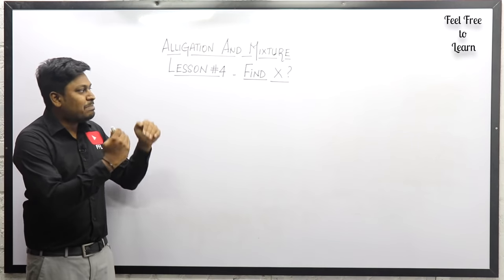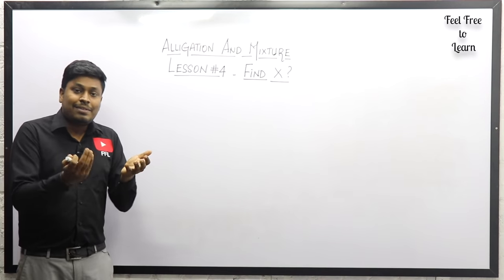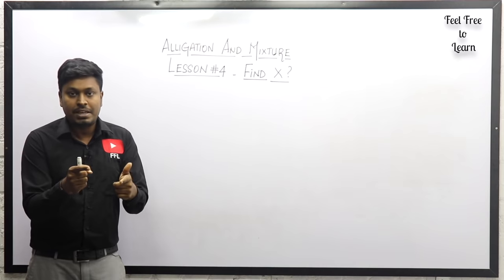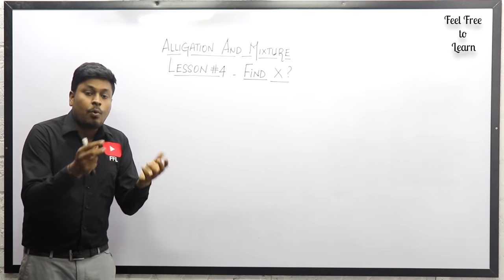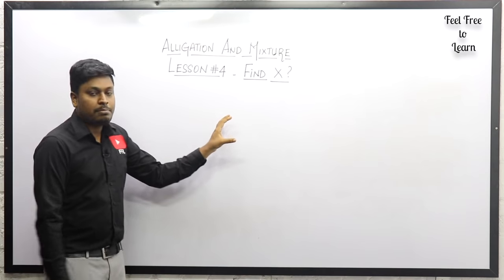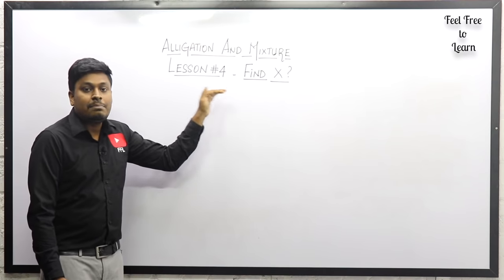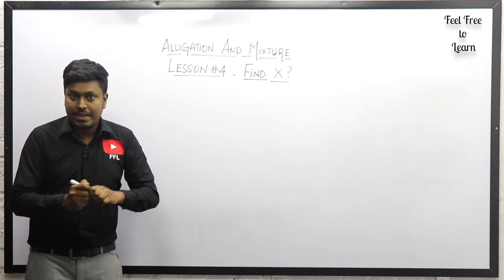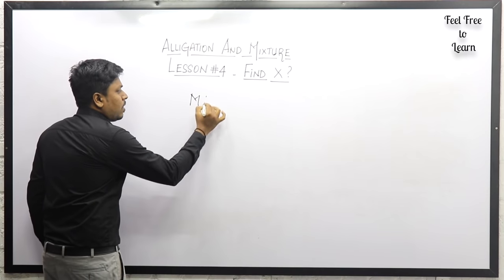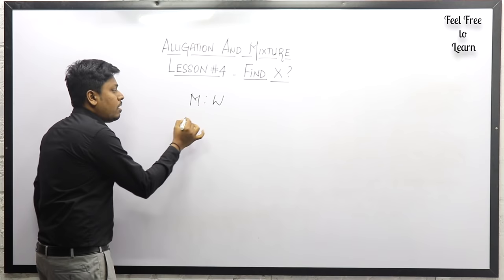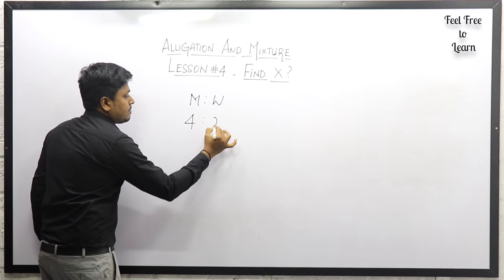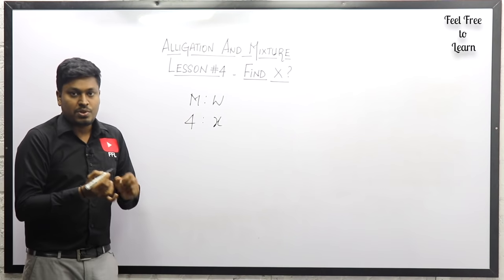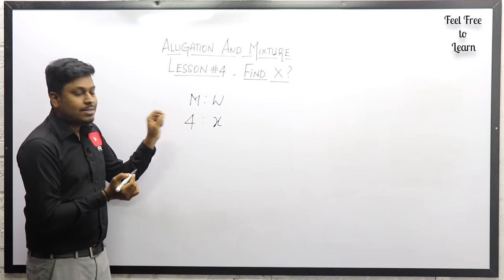Usually in all the previous lessons, a vessel contains milk and water and the milk and water ratio is given, and our target is to find in what ratio we need to mix. But in this lesson number four, the vessel contains milk and water in a ratio like four is to x — so one value will be unknown in the ratio itself. Our target is to find what is that unknown value.